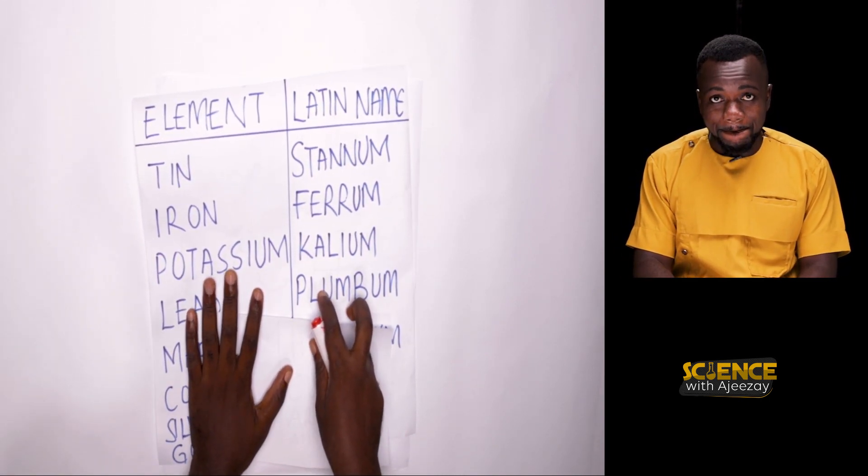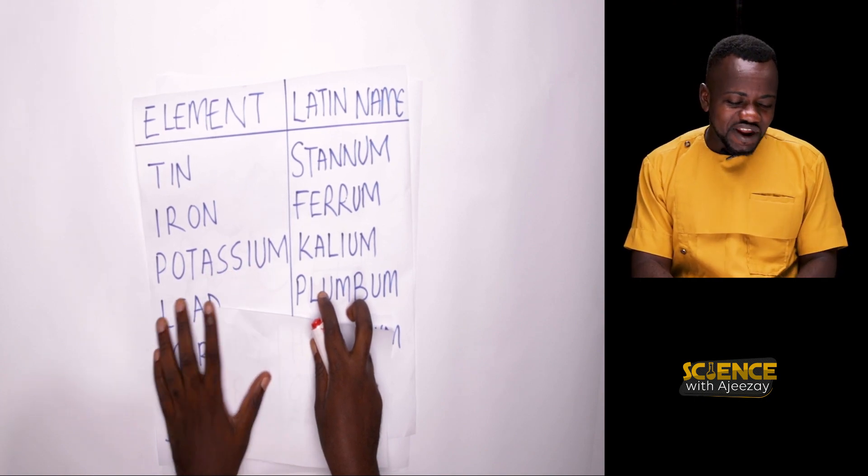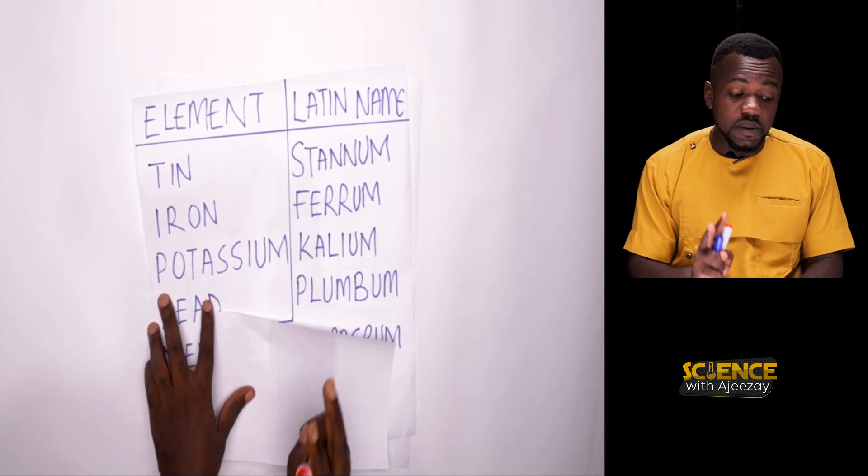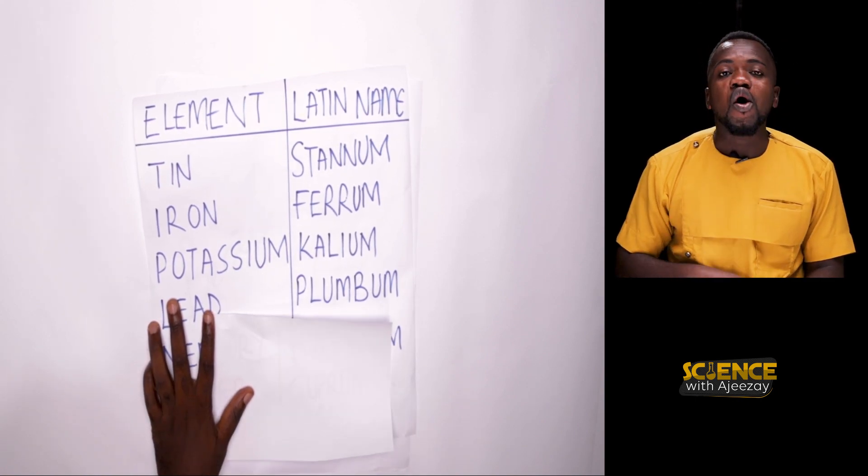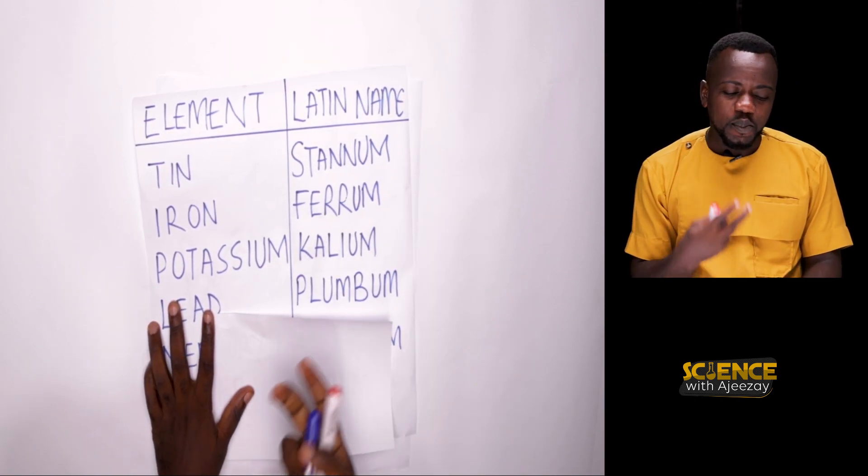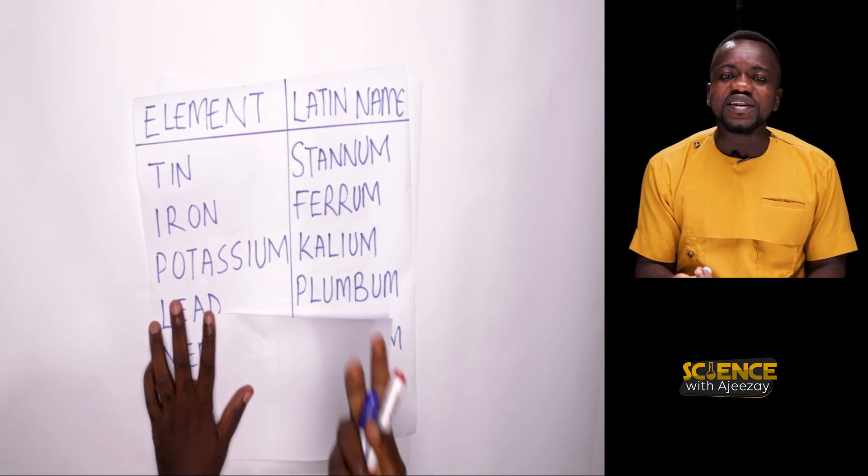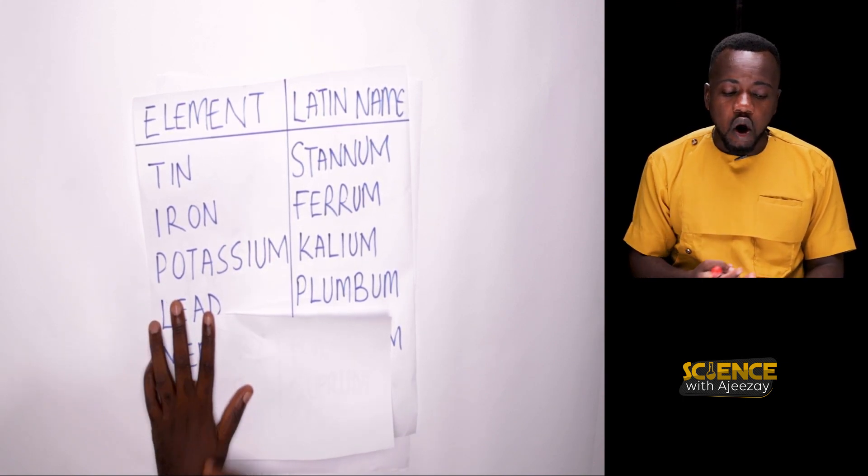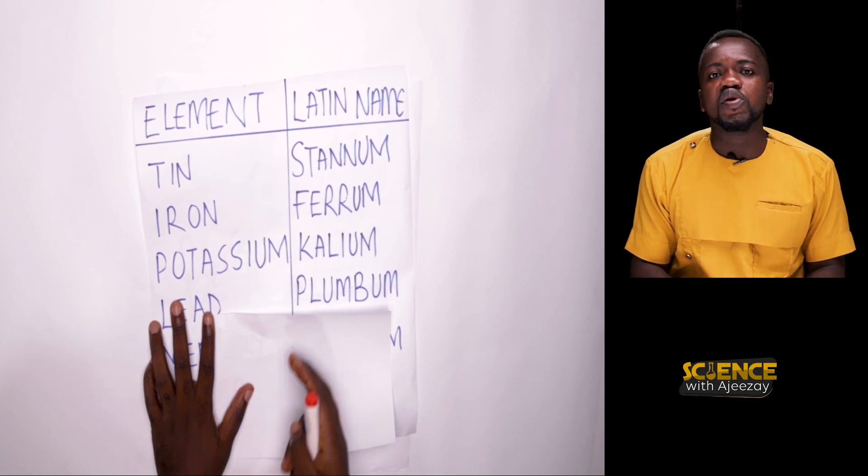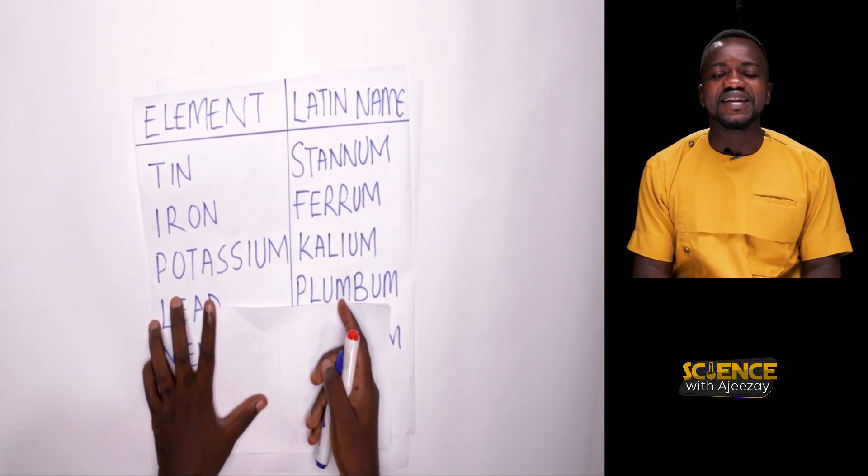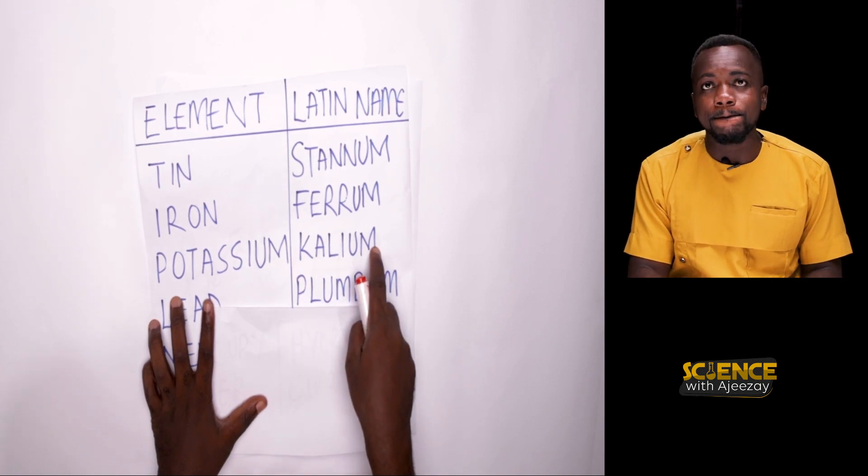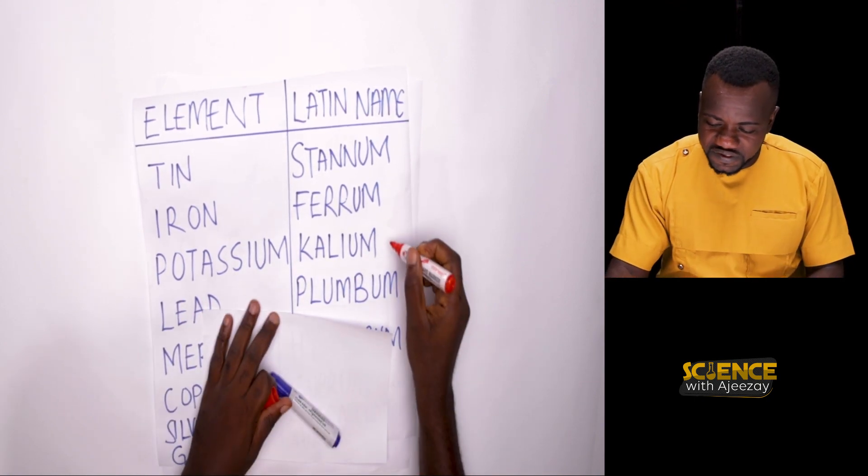An example, you remember potassium. Potassium should have been, if we're going by the first letter or the first two letters, potassium would have been a P or a PO. But no, potassium is K because it was named after the Latin name. And that is Kalium. So potassium is K.